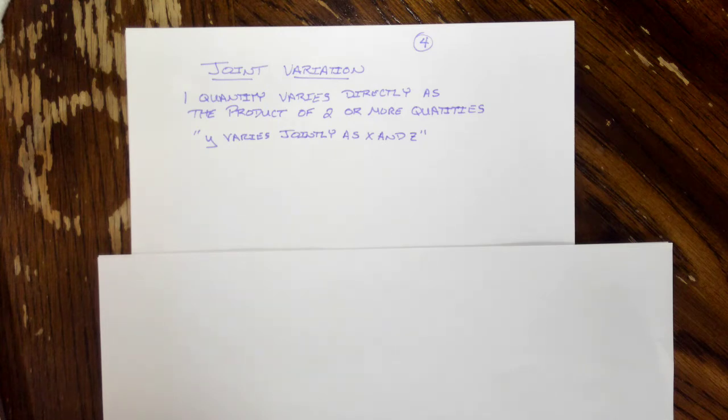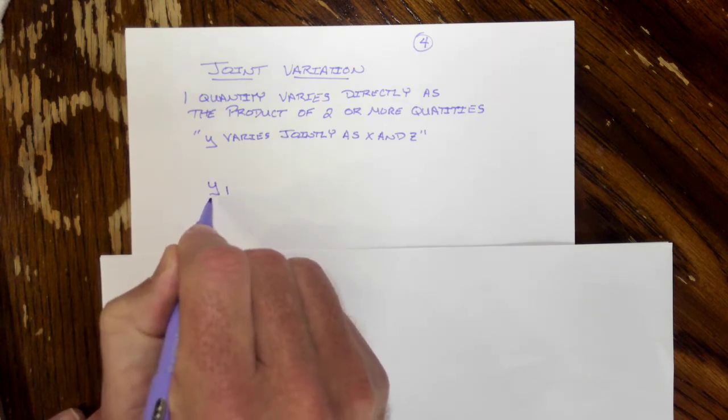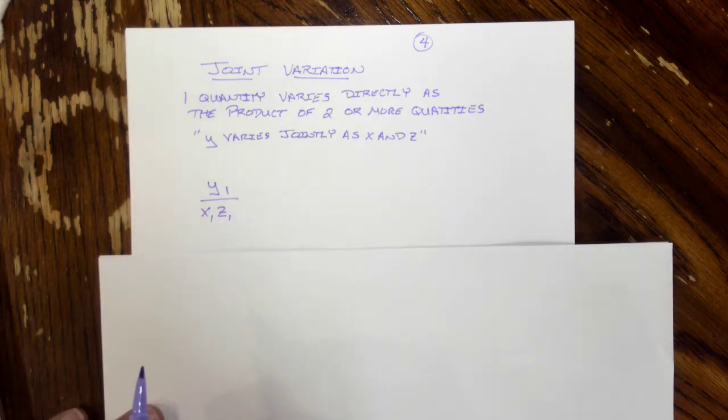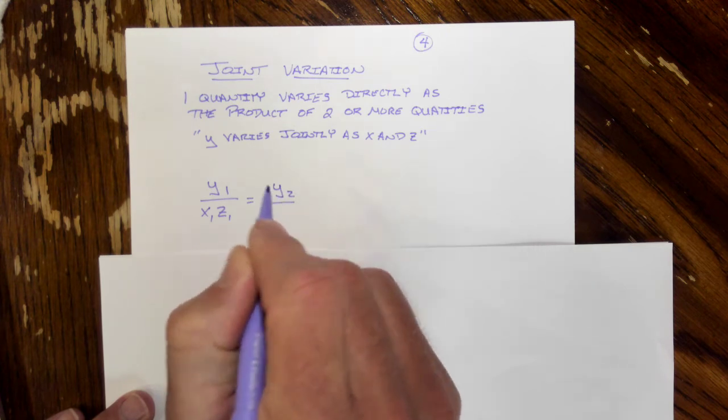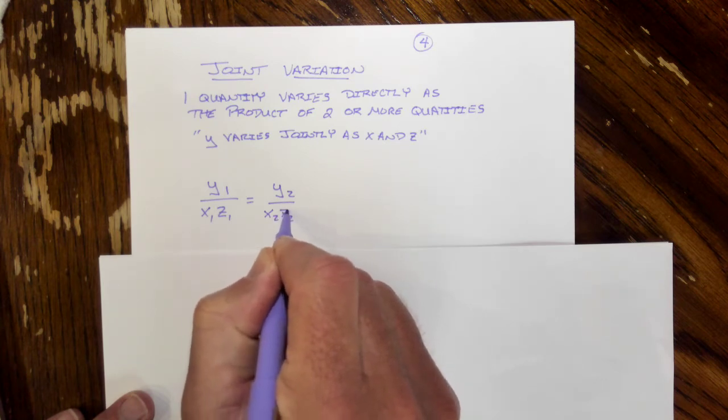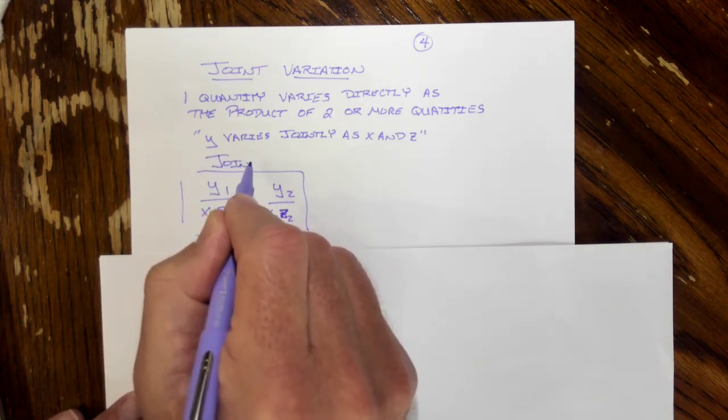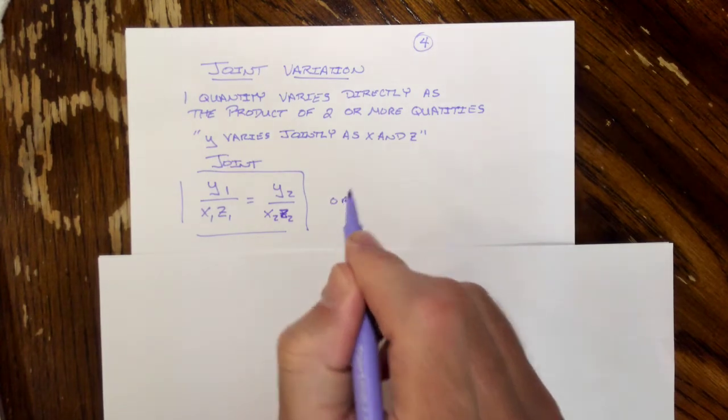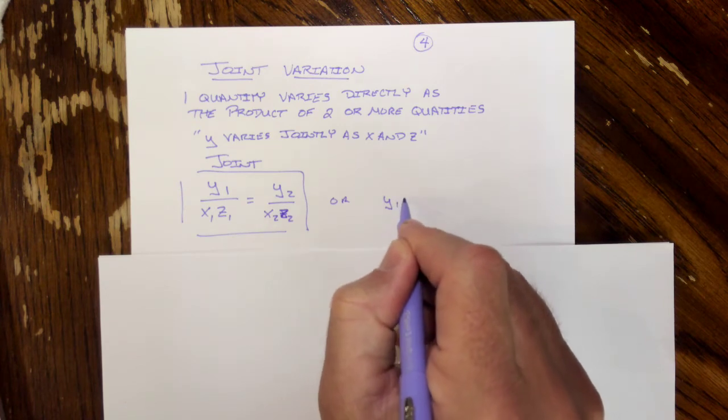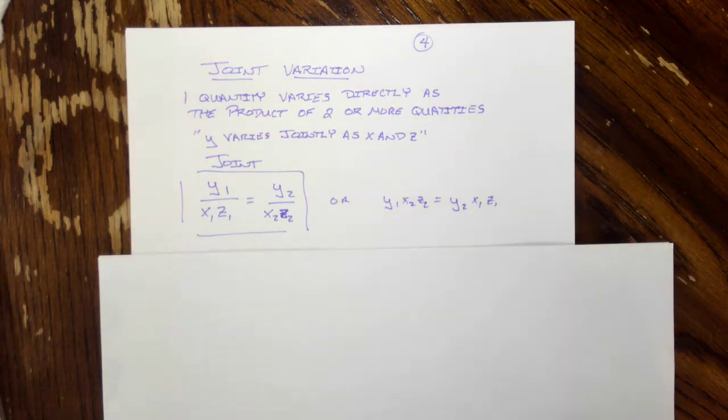Again I like the proportion setup so as we get our proportions going we will have Y sub one over the product of X one and Z sub one equal to Y sub two over the product, this will be our joint variation. Some people might also even have you know the setup you could do this one and just have Y one X two Z two equal to Y two X one Z one in other words the cross products of your proportion.